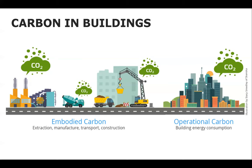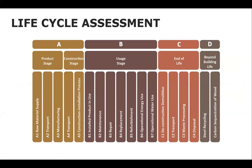Carbon in buildings is divided into two types. Embodied carbon comes from the material of the building — from extraction, manufacture, transportation, and construction. Operational carbon comes from electricity and natural gas use. In life cycle assessment, we also discuss the scope boundary: what we calculate is divided into stages A, B, C, and D. For LEED, you typically cover A to C; EPDs usually only address A1 to A3.